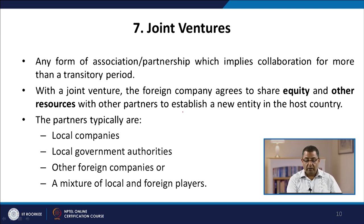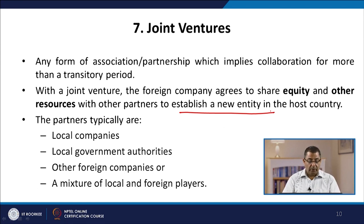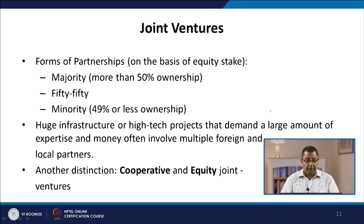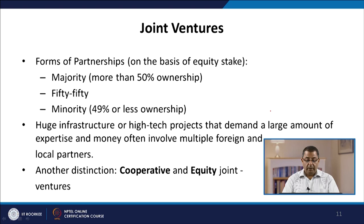It is important that they establish a new entity. The partners typically looked for are local companies, local government authorities, other foreign companies, or a mix of local and foreign players who come together to establish a new entity. The various forms of partnership based on equity are majority partners with more than 50% ownership, 50-50 ownership, or minority with less than 49% ownership. Huge infrastructure or high-tech projects often involve multiple foreign and local partners.